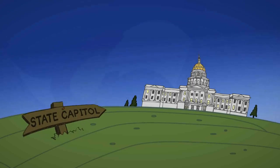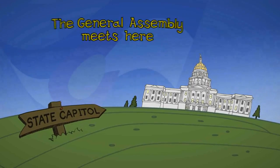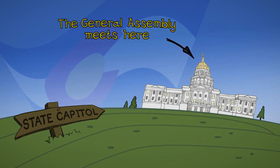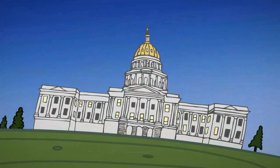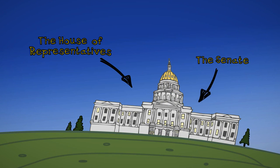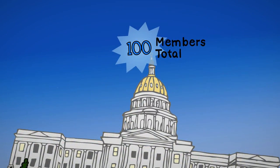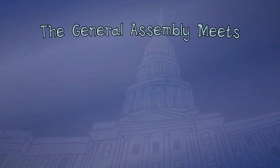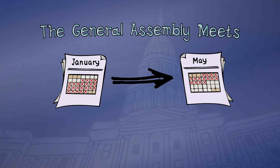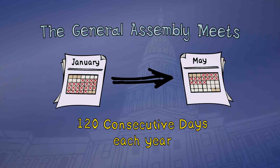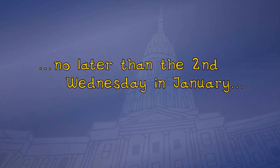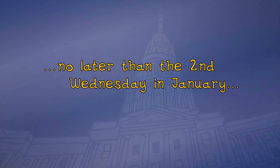The General Assembly is the entity where bills are written, debated, and voted on to become law. The Colorado General Assembly has two chambers: the House of Representatives and the Senate. The House has 65 members and the Senate has 35, for a total of 100 members. The General Assembly is guided by the state constitution to meet 120 consecutive days beginning no later than the second Wednesday in January.